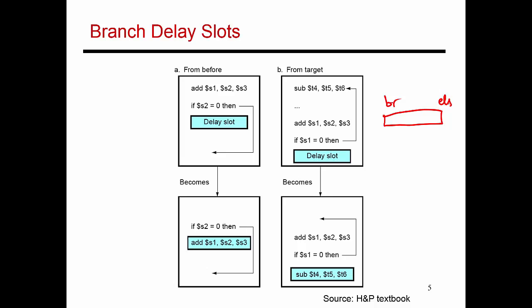So this branch — let's say it's an if-then-else statement, where if a condition is met, it jumps to the else part, and if that condition is not met, it executes the then part. The instruction after the branch is always fetched and executed. It takes two cycles to figure out which way the branch is going to go, so it's only by the third cycle that I can start fetching instructions correctly from the then part or the else part.